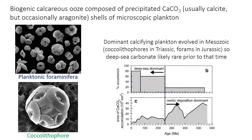Interestingly, both of these groups evolved in the Mesozoic, so there would likely have been little, if any, deep-sea carbonate sediment, at least far away from the coastlines, prior to that time. So unlike today, most carbonate in the Paleozoic, for example, would have been deposited in shallow coastal, or what are called neritic, environments.